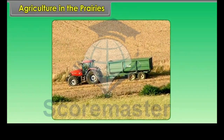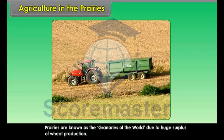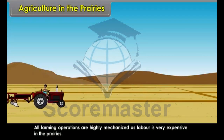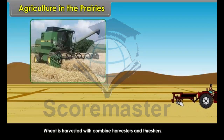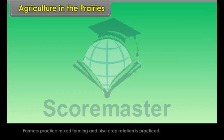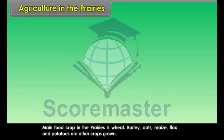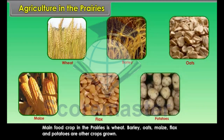Wheat farming is the main agricultural activity on the prairie lands. Prairies are known as the granaries of the world due to a huge surplus of wheat production, and are also called the wheat basket of the world. All farming operations are highly mechanized as labour is very expensive. Wheat is harvested with combined harvesters and threshers. Farmers practice mixed farming and crop rotation. The main food crop is wheat, while barley, oats, maize, flax and potatoes are other crops grown.